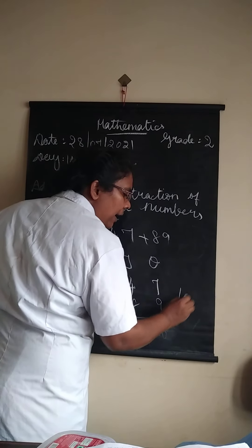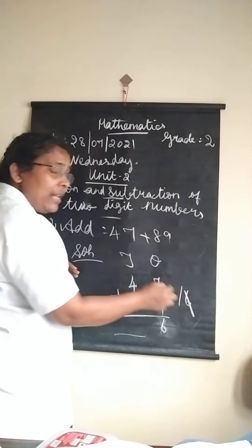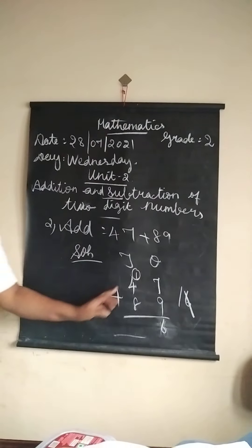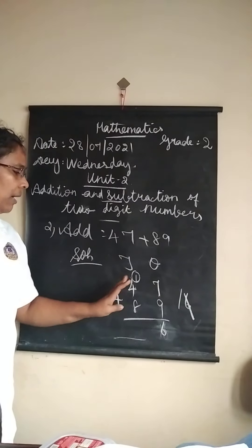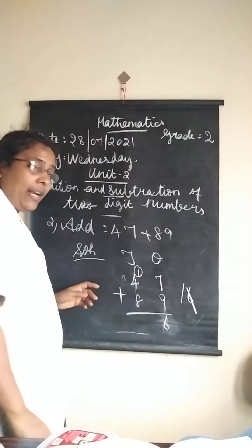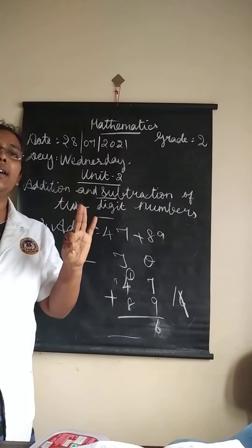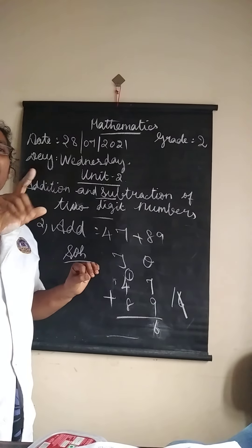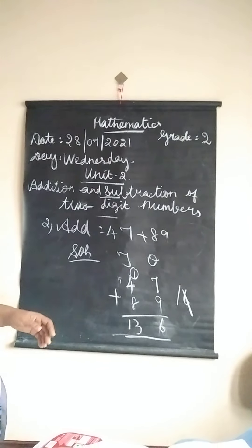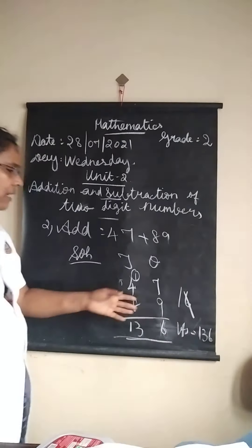If you get the answer 16, write the 16 outside. Now we have to keep the 6 in the ones place. Here we have a balance. So you should write the balance number up and add again. What is the answer for 1 plus 4? 1 in mind, take 4 fingers — 1 after 2, 3, 4, 5. Now add 5 and 8: 5 in mind, take 8 fingers — 5 after 6, 7, 8, 9, 10, 11, 12, 13. Write 13 together. The answer is 136.